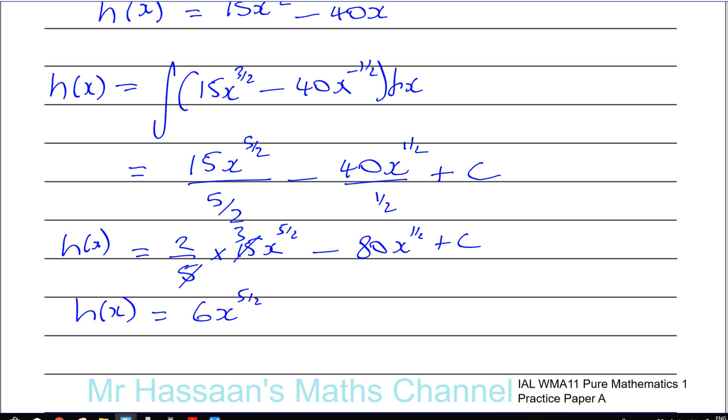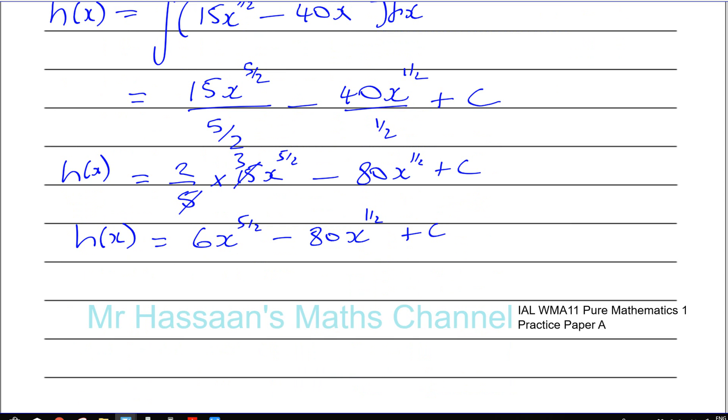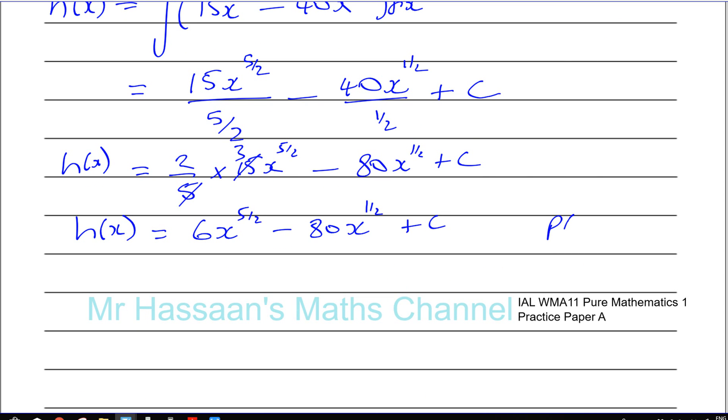Okay, now they gave us a point, which was (4, 19). So we know the point (4, 19) is on this curve. So what we can do here is we can substitute the value of x and y from the point P, as it satisfies this equation, into the equation, and we'll be able to find what C is.